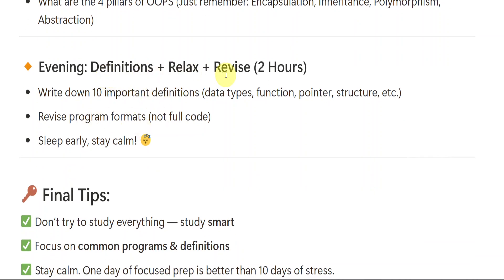Definition plus relax plus revise. What you need to do - you have to write down 10 important definitions like data types, functions, pointer, structures, keywords, constants, enumerated data type, union, structure. Then revise program formats - not full code, just the format or structure. If you know this, you can easily go with the program. Sleep early and stay calm.